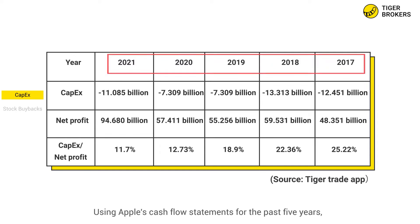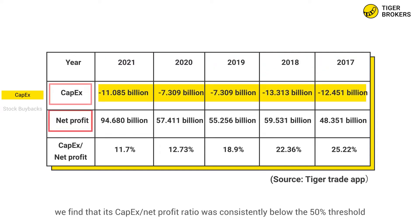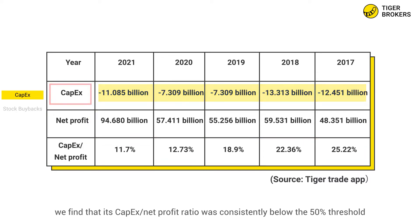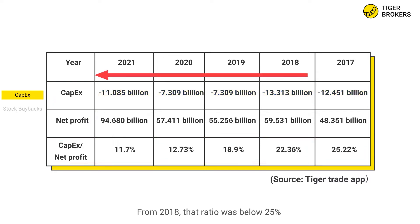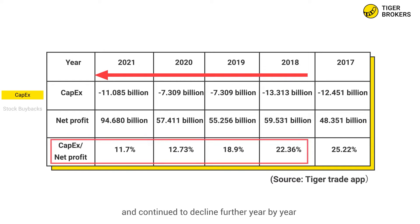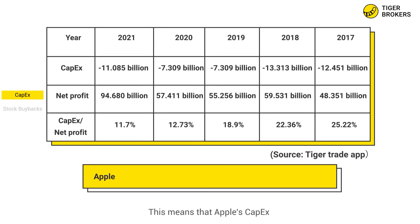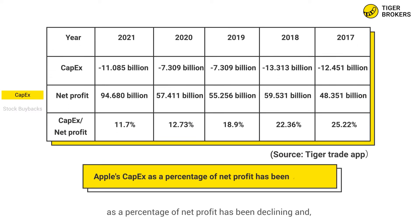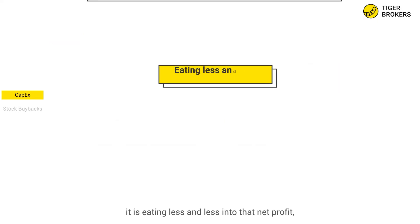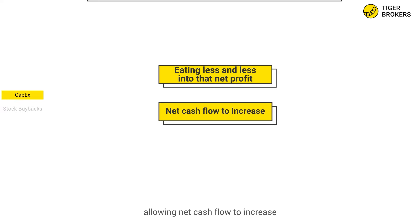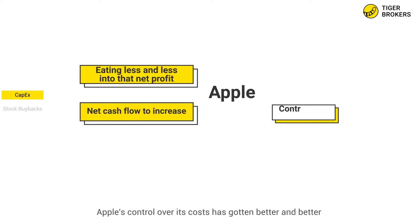For example, using Apple's cash flow statements for the past five years, we found that its CAPEX-to-net-profit ratio was consistently below the 50% threshold. From 2018, that ratio was below 25% and continued to decline further year by year. This means that Apple's CAPEX as a percentage of net profit has been declining, and as a result, it is eating less and less into that net profit, allowing net cash flow to increase. In other words, Apple's control over its costs has gotten better and better.